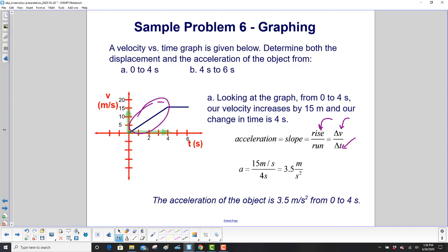So our acceleration is going to be change in velocity, which is 15, right? It's 15 minus 0. And the time is 4 minus 0. So it's 15 divided by 4. We get 3.5 meters per second squared.